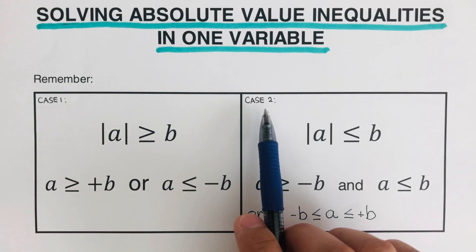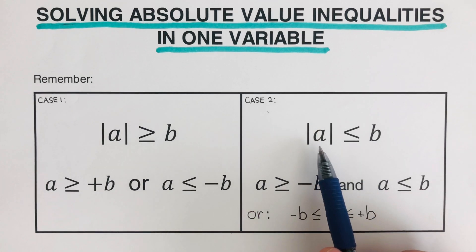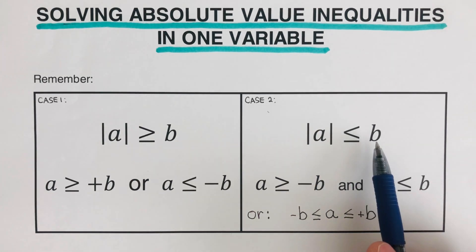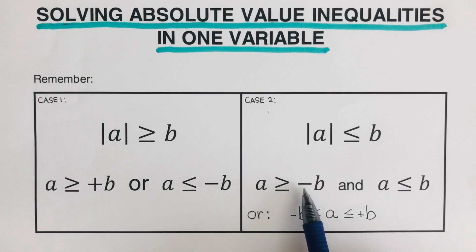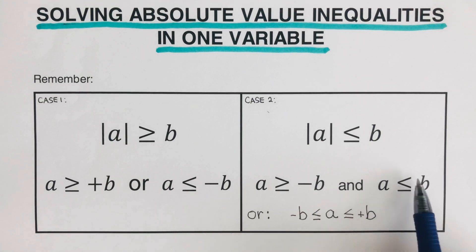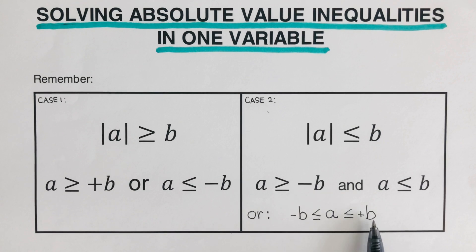Case two is whenever the absolute value of a is less than or equal to b. We use the conjunction 'and', meaning a is greater than or equal to negative b and a is less than or equal to positive b. We can also write this as a compound inequality: negative b is less than or equal to a, which is less than or equal to positive b.